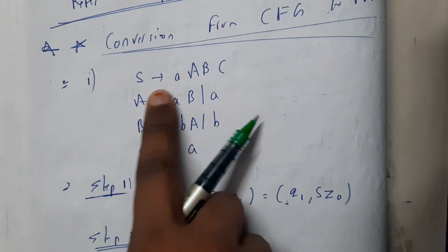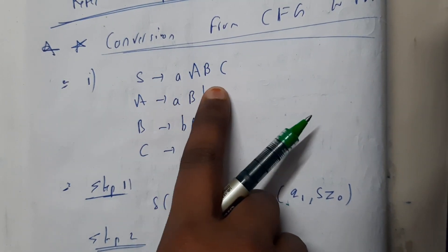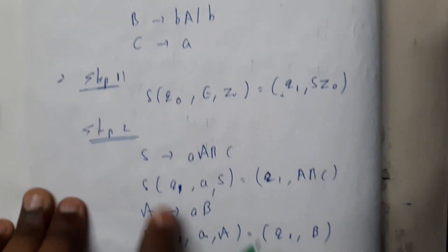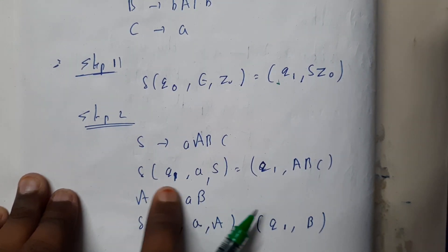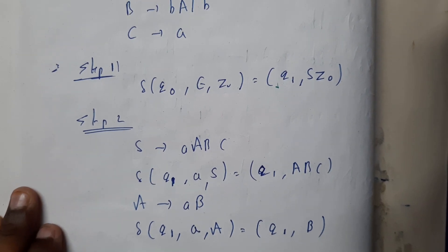So the first statement is S tends to a capital A B C, right? So S tends to a A B C. From the initial state, let us assume from here we will be assuming the Q1 as our initial state.